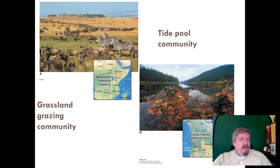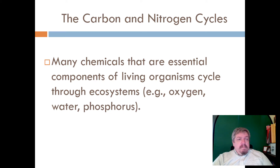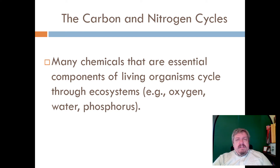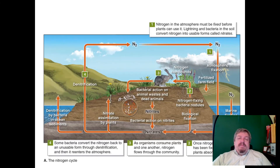Part of what sustains these communities is the carbon and nitrogen cycle — the movement of chemicals that helps facilitate life. All life needs certain chemicals: we all need water, carbon, nitrogen, phosphorus. Without these chemicals, life could not be built.